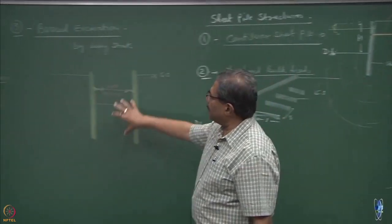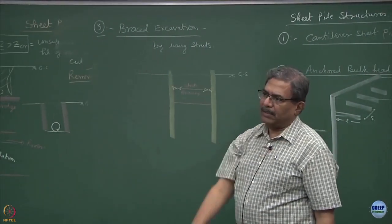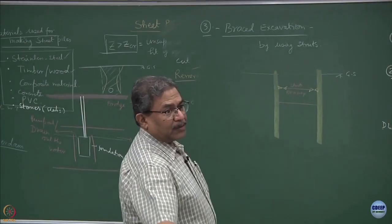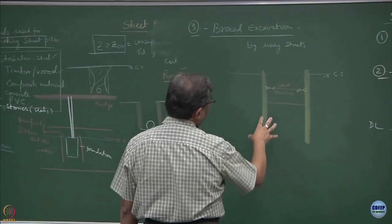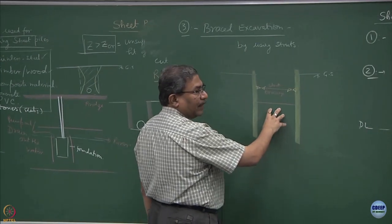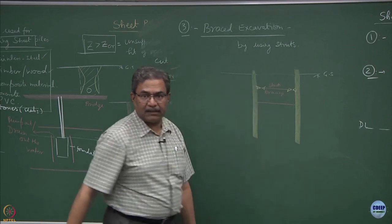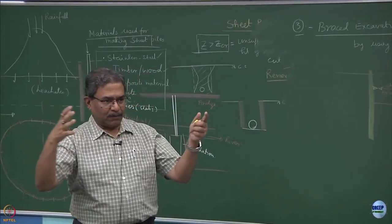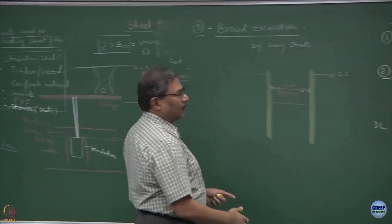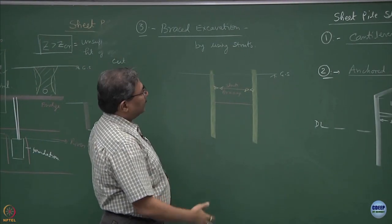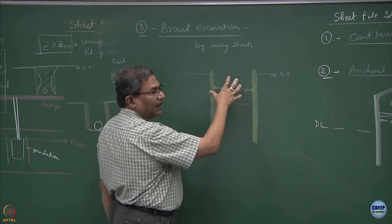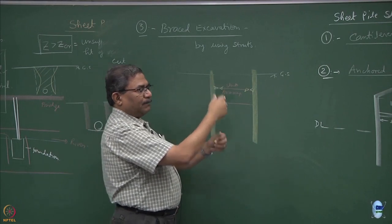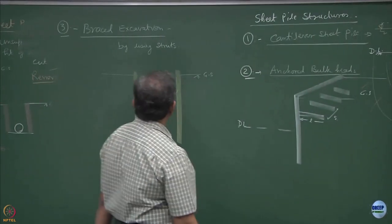This becomes a typical braced excavation. We will be discussing a bit about this in CE 330. Metros are mostly done by using this type of system. You might have to have struts. If you go to a metro station, the way it is being done, you are excavating out the soil, cutting out the rock and then you want to support the walls of the rocks or the soil mass and there you require struts. This could be columns also, many times you use the pillars to support it.